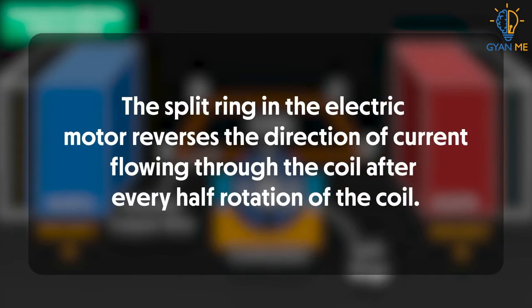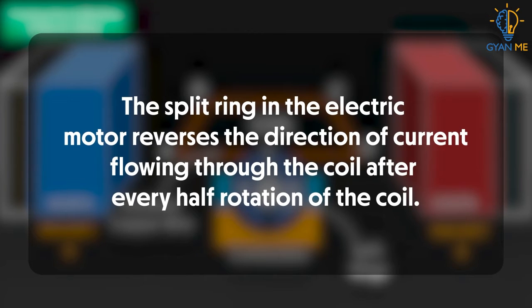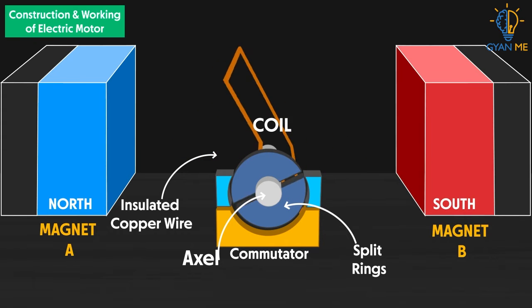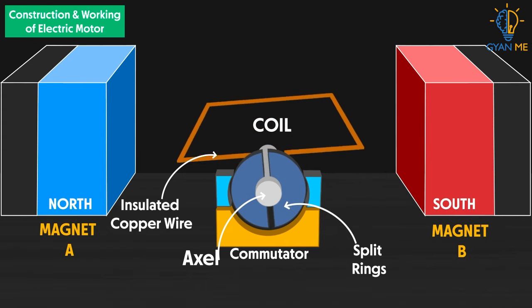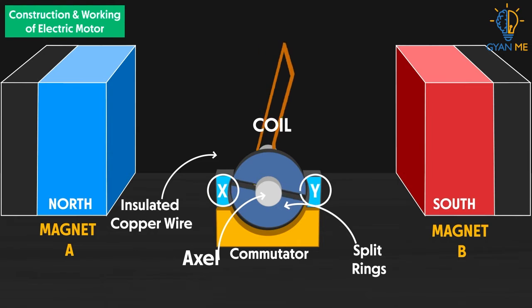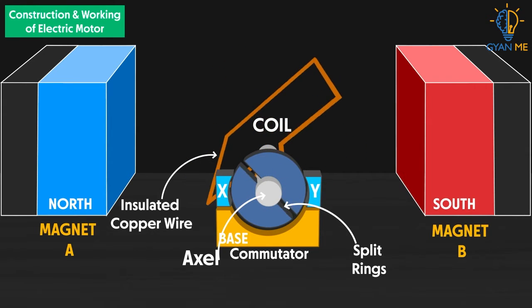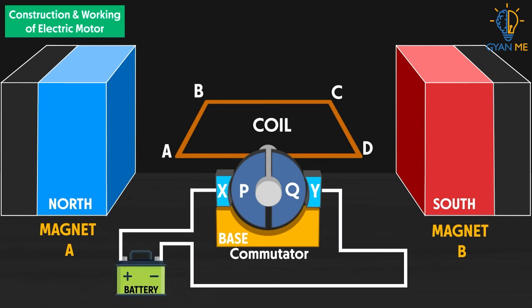The split ring in the electric motor reverses the direction of current flowing through the coil after every half rotation of the coil. The inner sides of the rings are insulated and attached to an axle. The rings are free to rotate when the coil rotates. The carbon strips X and Y are used as conducting brushes and are fixed to the base of the motor. A battery is connected to the circuit to supply the current.